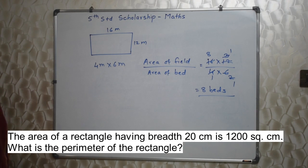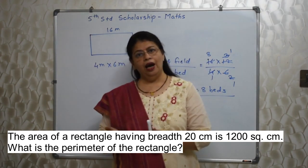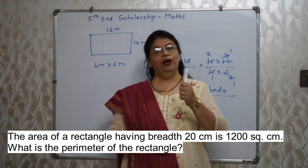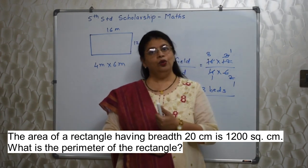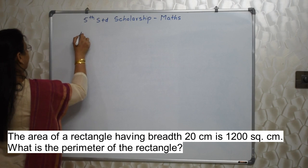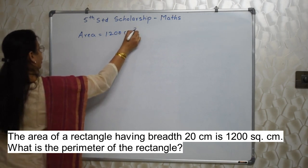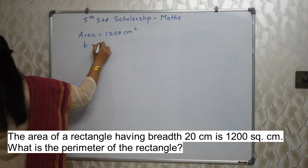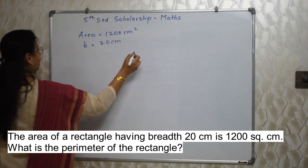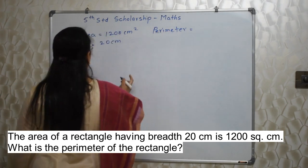Next sum: the area of a rectangle having a breadth of 20 centimeter is 1200 centimeter square. What is the perimeter of the rectangle? Students remember — perimeter and area are very closely related; if you know the perimeter you can find out the area and vice versa. Here they have given area = 1200 cm² and breadth = 20 cm. To find out perimeter, we require length as well as breadth.